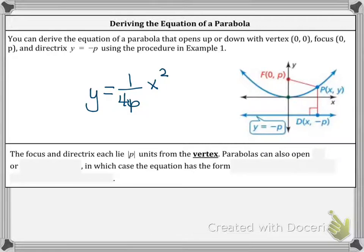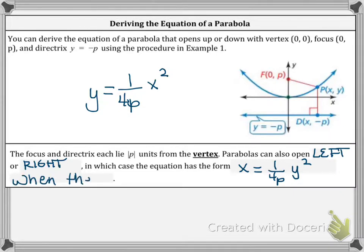Parabolas can also open left or right, in which case the equation has the form X equals 1 over 4P, Y squared. This is specifically when the vertex is at the origin, at 0, 0.